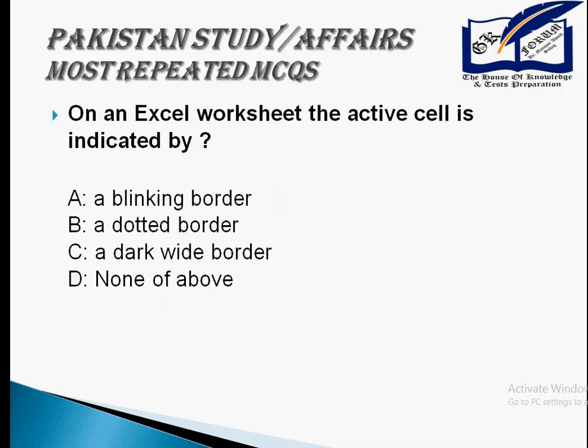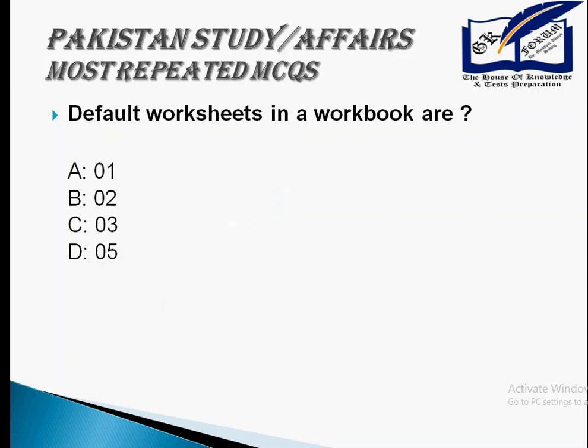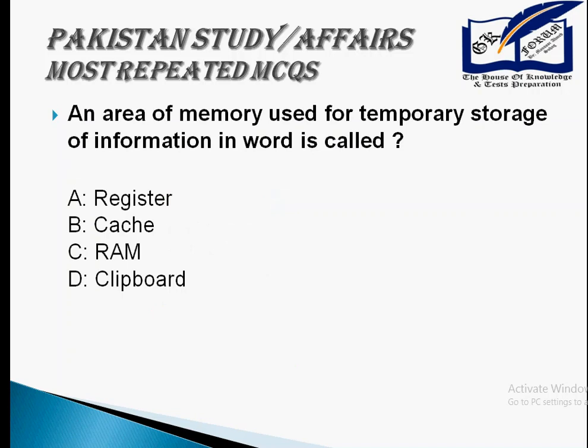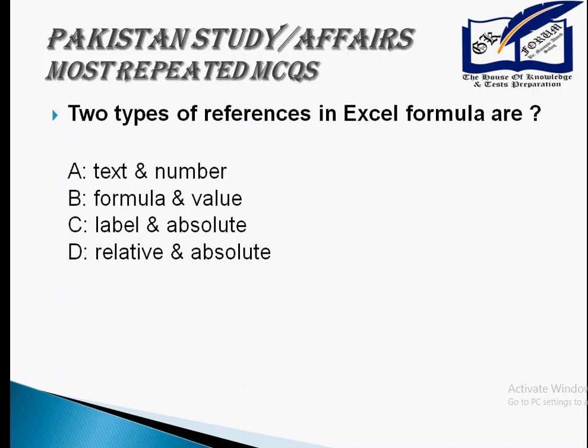On an Excel worksheet, the active cell is indicated by its dark white border. Default worksheets in a workbook are 3. An area of memory used for temporary storage of information in Word is called its clipboard. Two types of references in Excel formulas are relative and absolute.